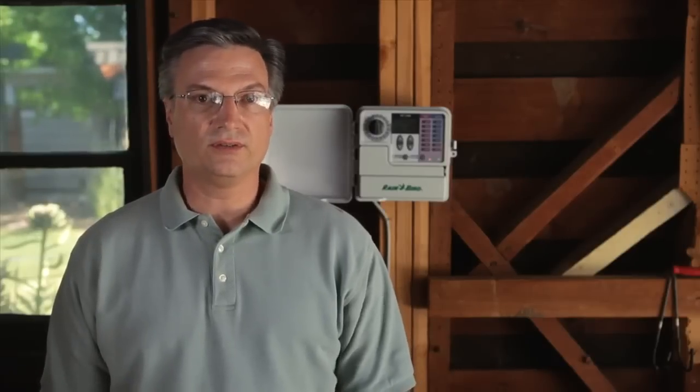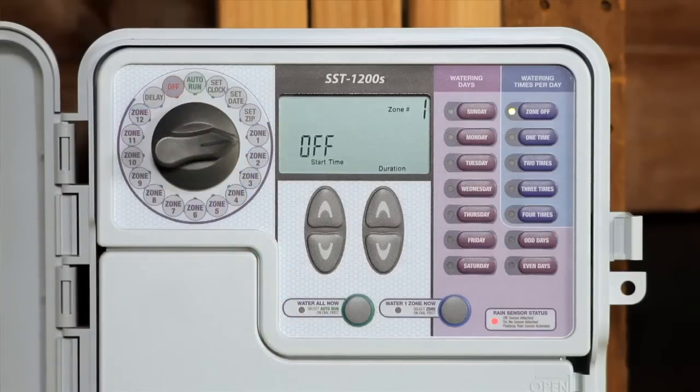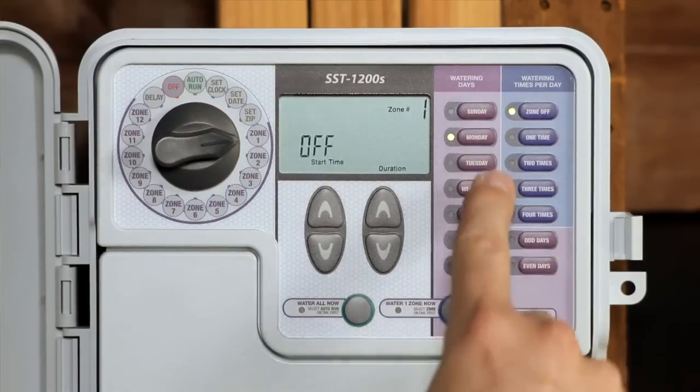Starting with the dial set to the first zone you want to program, push the buttons for each day of the week to turn watering on or off for that day.